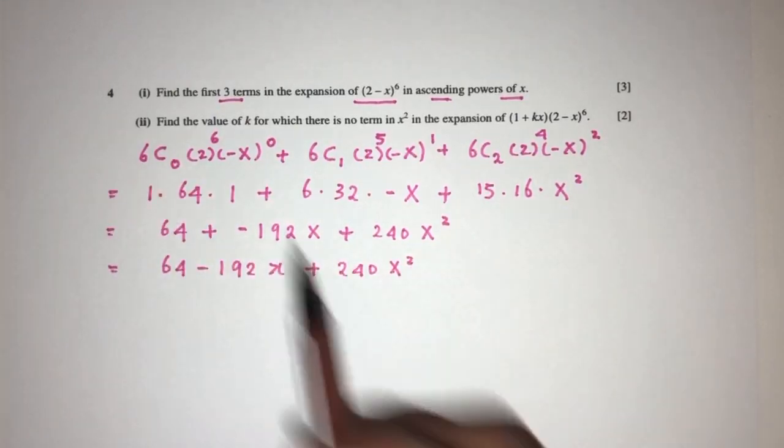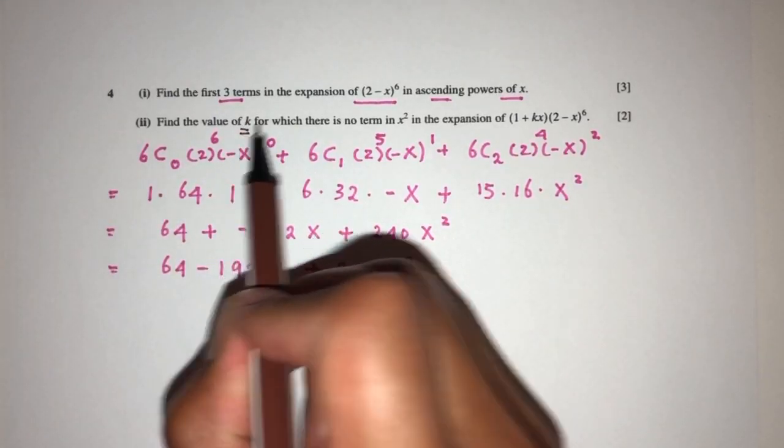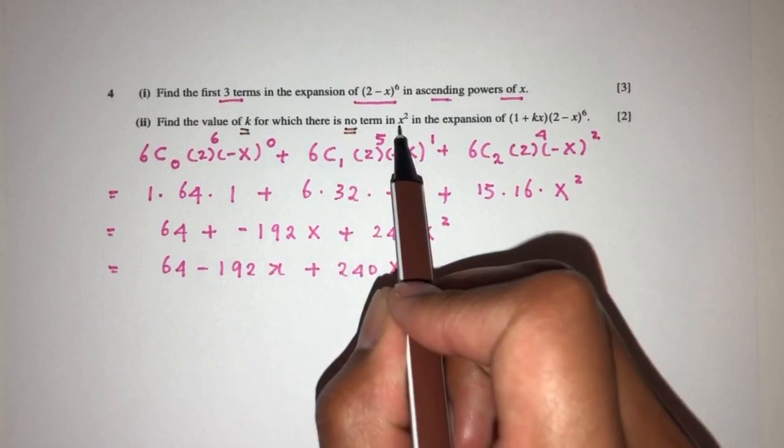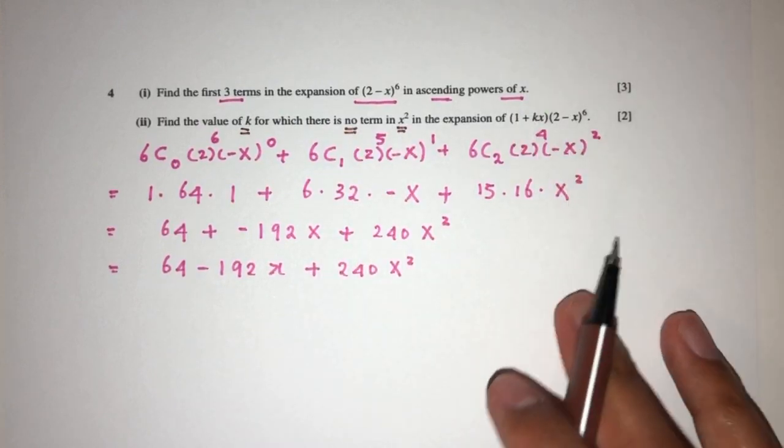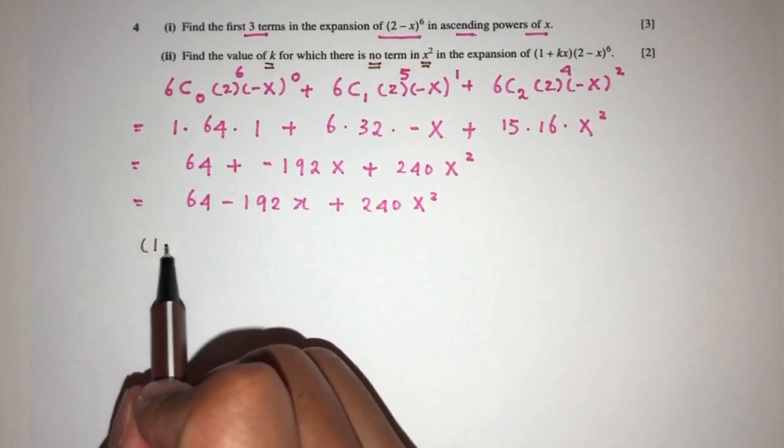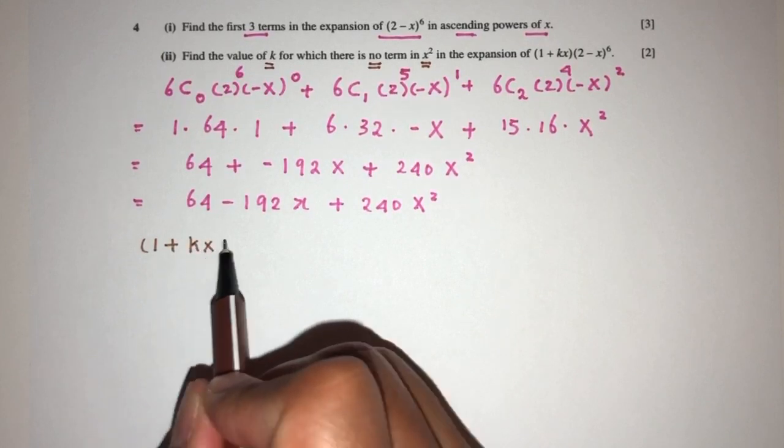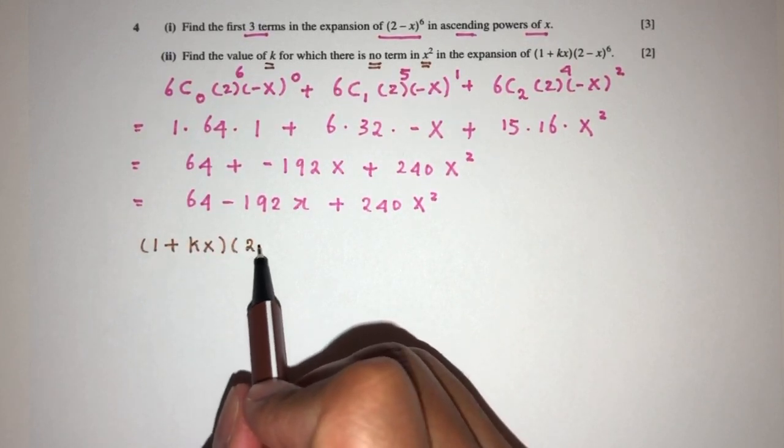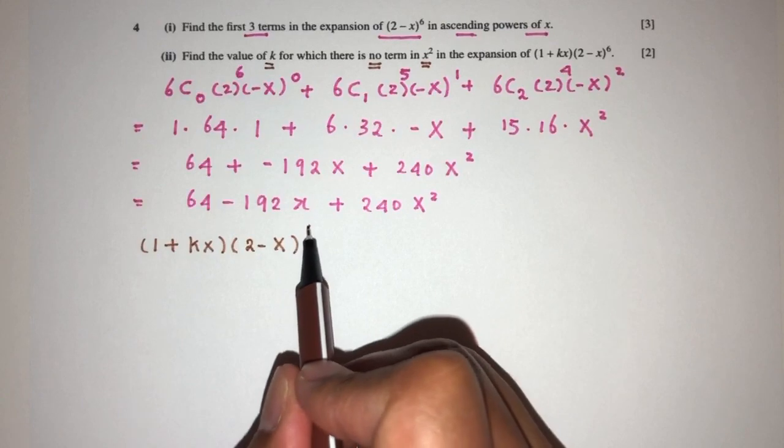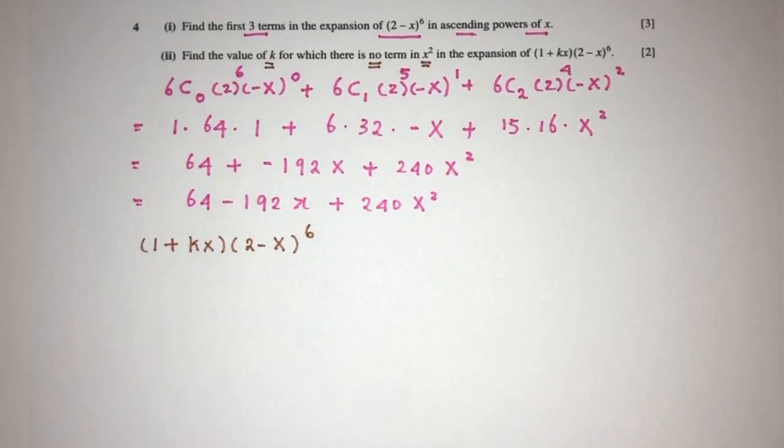Now for part 2, we had to find the value of k for which there's no term in x squared for this expansion. So now we have to expand (1 + kx) multiplied by (2 - x) power 6. Now we have something here.